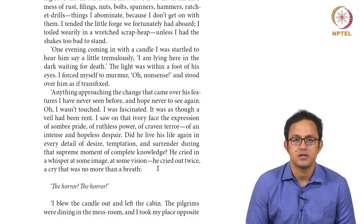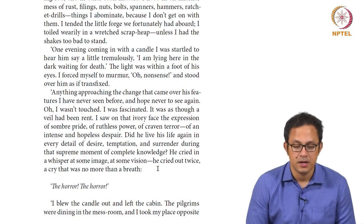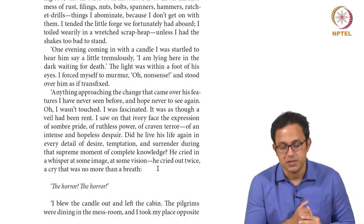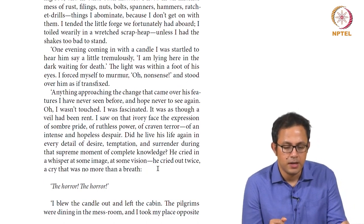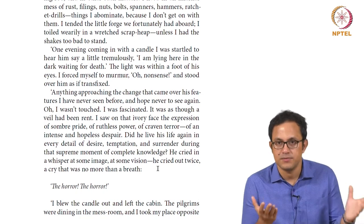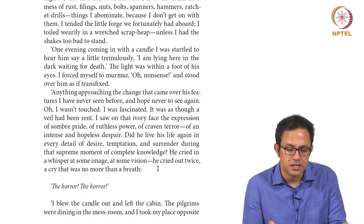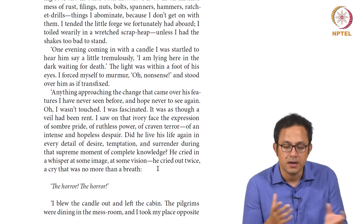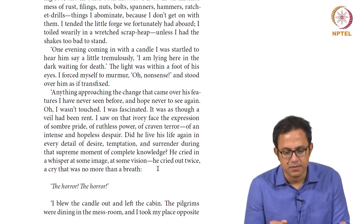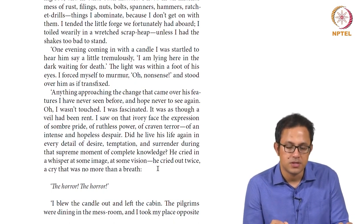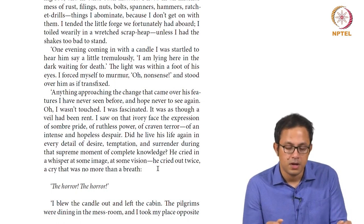Hello and welcome to this NPTEL course entitled Twentieth Century Fiction where we are looking at Joseph Conrad's Heart of Darkness. Today will be the last lecture on this particular text and we will look at two sections and compare and contrast them in terms of how they inform the larger narrative of imperialism, exploitation, human greed, commodification and alienation — the two symptoms which emerge out of merciless capitalism and imperialism, which is the context of Belgian ivory imperialism in Congo.